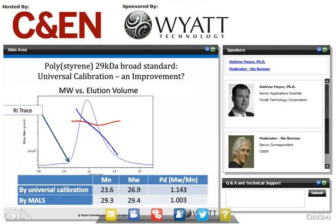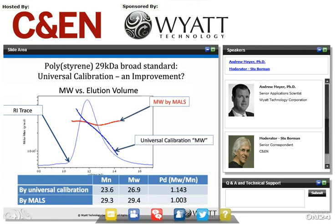Moving on, we have the question of universal calibration. At least one or two of you might be thinking: can't we use a viscometer to improve on the column calibration and instead go to a universal calibration regime? Maybe all these problems go away. So let's involve a viscometer as well and see how much it helps. Here's an example of a universal calibration scenario where we plot the product of molar mass times viscosity versus elution volume. It's proposed that we can apply this to any random coil polymers — hence the name universal. We struggle when we compare the universal calibration-derived results with the absolute molar mass results from the MALS.